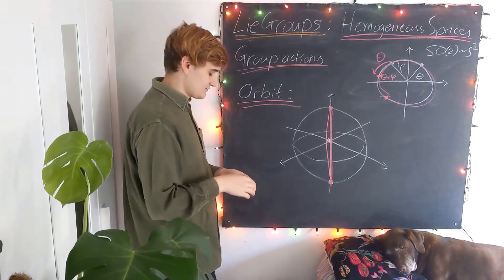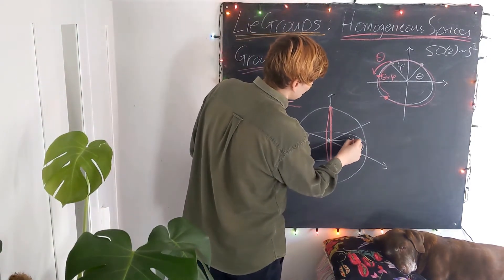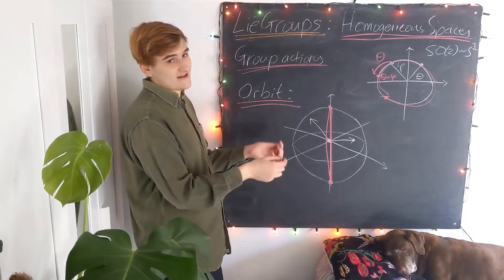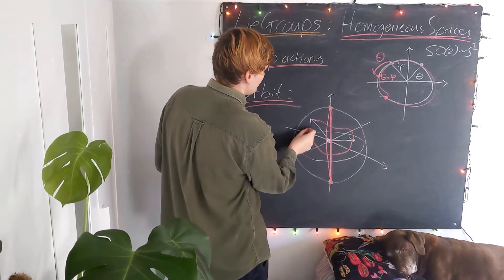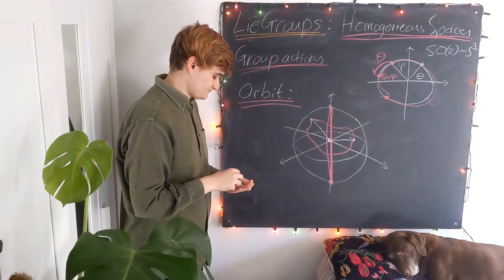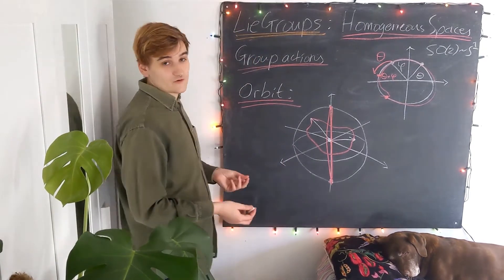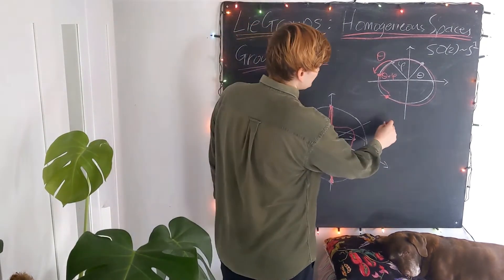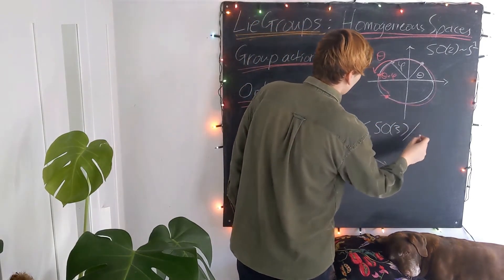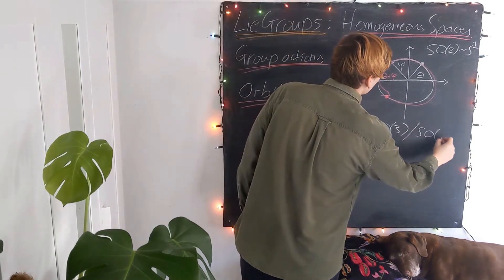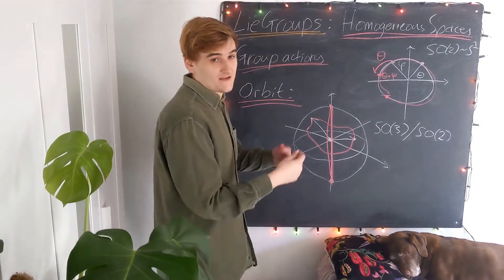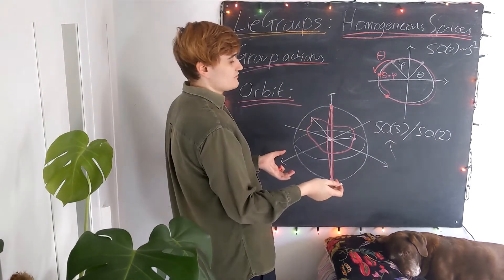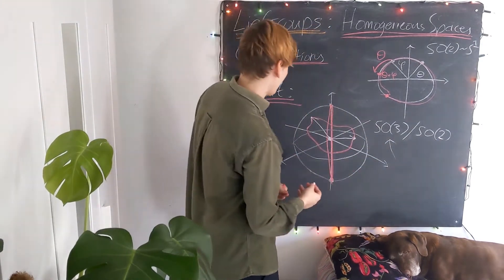SO3 is going to have non-trivial orbits: from any point in the manifold we can consider another point, and there are many possible paths through the group to get there. Now let's talk about homogeneous spaces. When we form a homogeneous space, we essentially form an equivalence class of two groups. The first example is SO3 modulo SO2 — this equivalence relation is essentially saying: take all elements from SO3 which are equivalent under the SO2 group action.